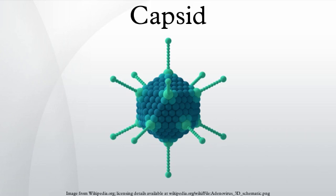The capsid encloses the genetic material of the virus. Capsids are broadly classified according to their structure. The majority of viruses have capsids with either helical or icosahedral structure.